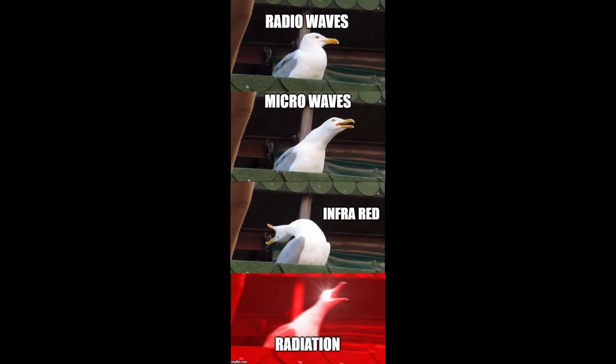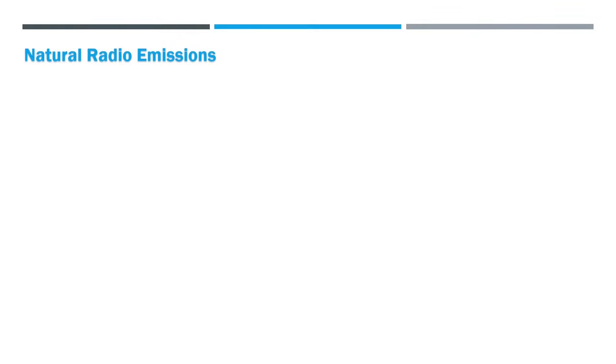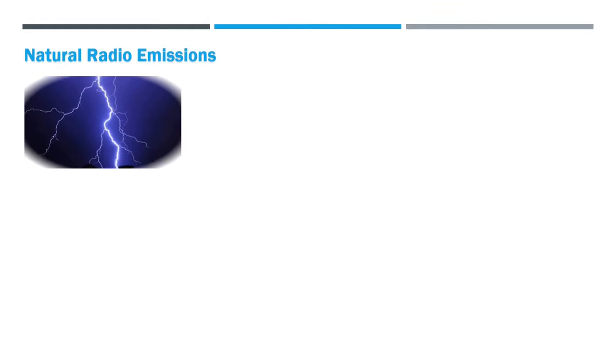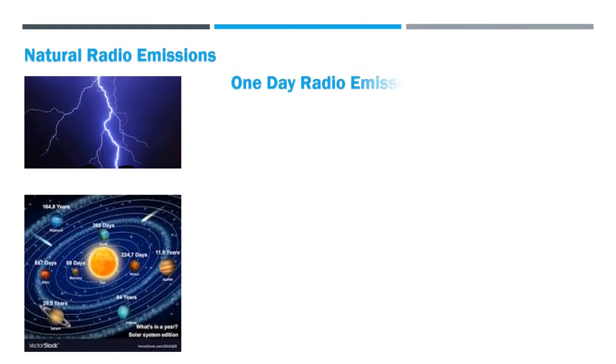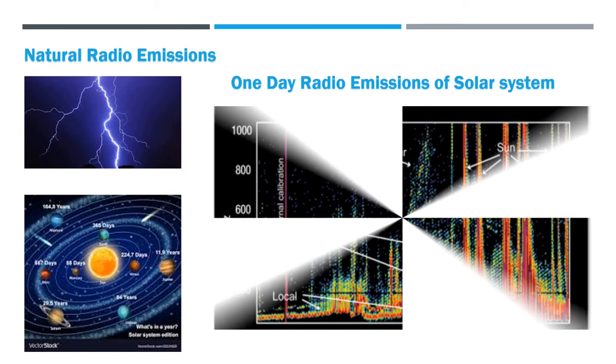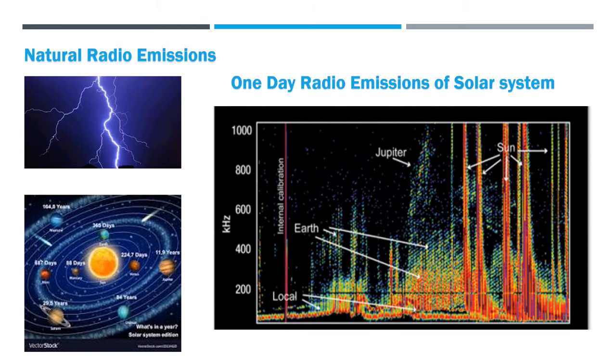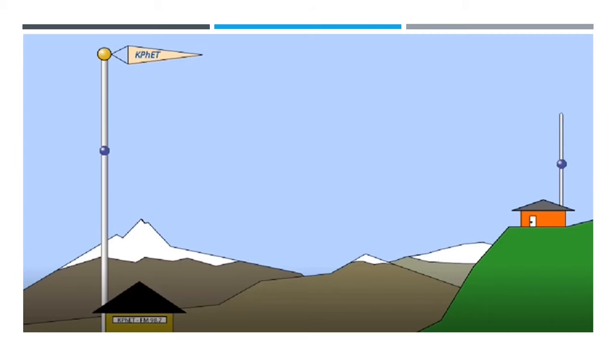The higher the frequency, the higher the energy. Radio waves can either be generated by natural sources such as lightning or astronomical bodies such as the sun and planets. Here is a graph of one day of radio emissions by the solar system. Or they can be generated by artificial sources such as broadcast radio towers, cell phones, satellites, and radar.